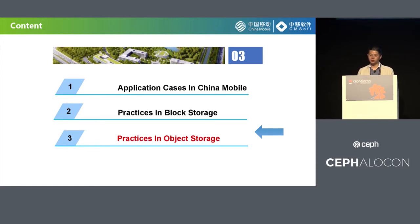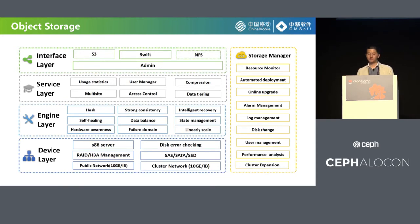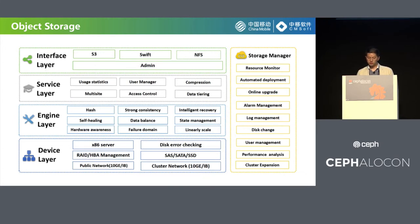Object storage is a computer data storage architecture that manages data as objects. It allows the retention of massive amounts of unstructured data, like photos, videos, and so on. Our object storage is also based on Ceph. Below is the architecture overview of the object storage product. It's compatible with S3 and Swift, supporting lifecycle, versioning, data tiering, compression, multi-site, and some other features. Same as block storage, object storage also has a storage management platform for operation and maintenance engineers. We use a unified management platform to simplify development and improve product standardization.